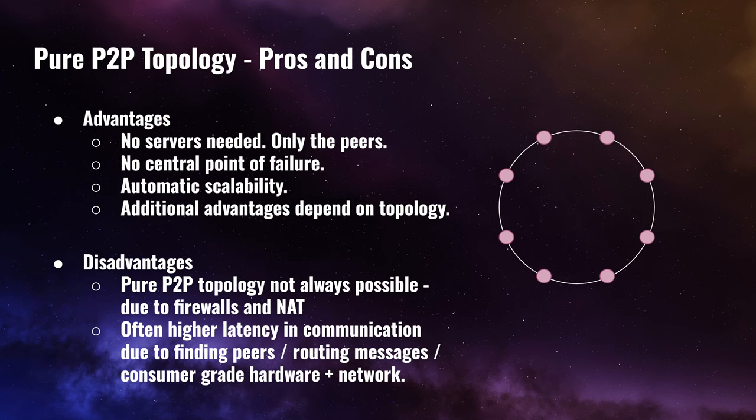Peer-to-peer topologies have certain advantages and disadvantages. The advantages are that there are no servers needed, only the peers, which means there's no central point of failure. You get a certain level of automatic scalability — as more peers join the network, more compute power and network bandwidth will be available. And there are some additional advantages that depend on the concrete topology.